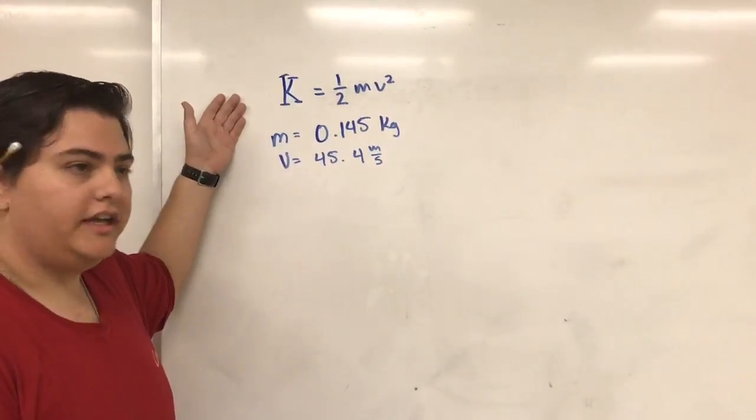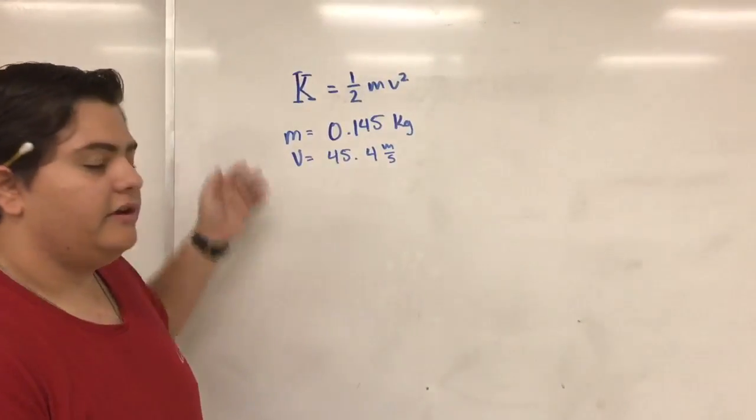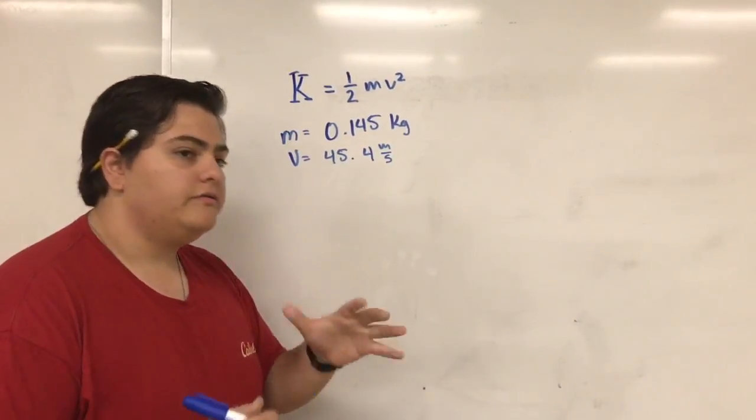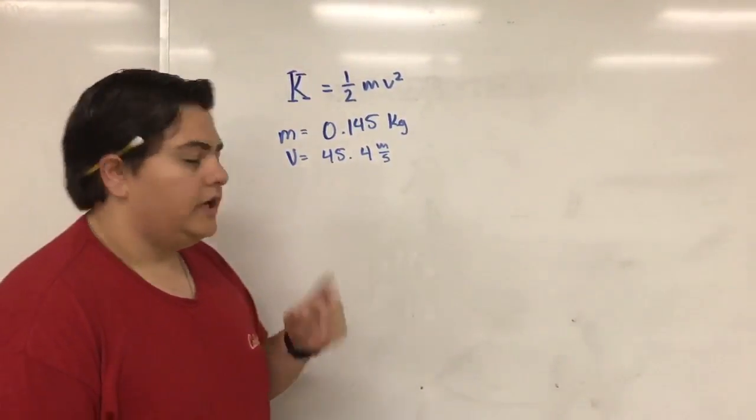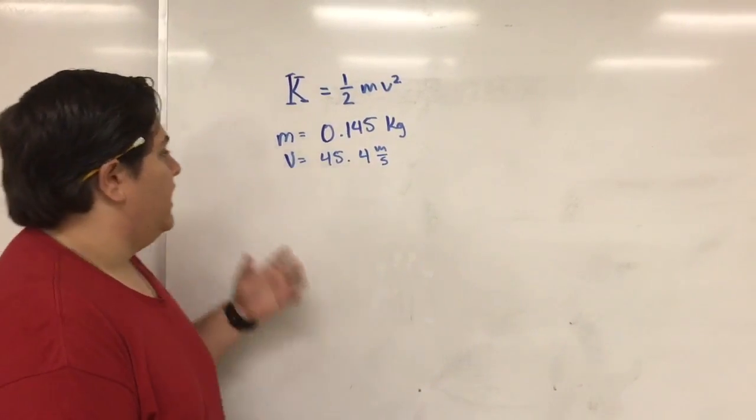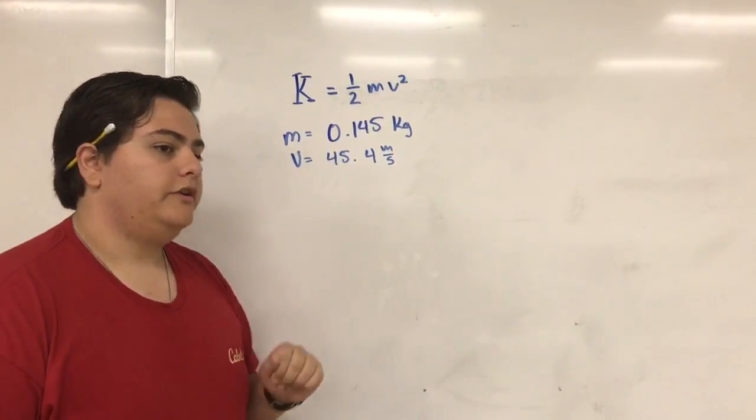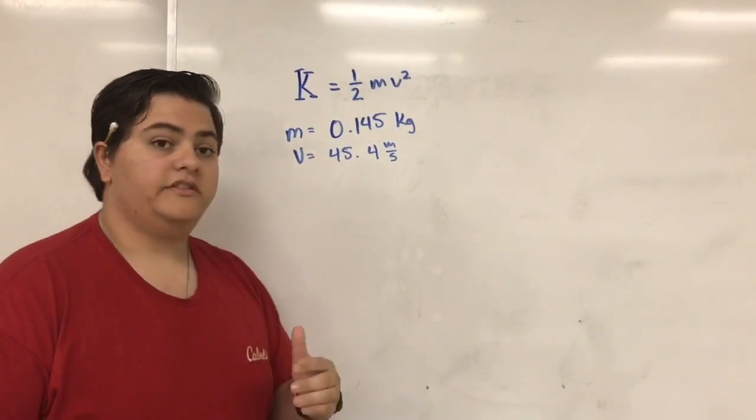So right here we have the formula for kinetic energy, and then we have a couple of givens. Everyone knows that a baseball weighs roughly 0.145 kilograms, and that pitch was thrown at 101 miles per hour, which roughly translates to 45.4 meters per second.